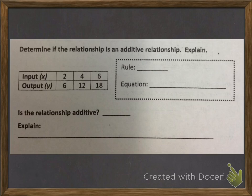So again, looking at our table, we compare the input and the output values, the x and the y, and I notice that I could add 4 to 2 to make it equal 6, but if I add 4 to 4, that does not equal 12.